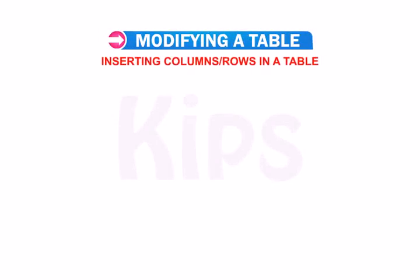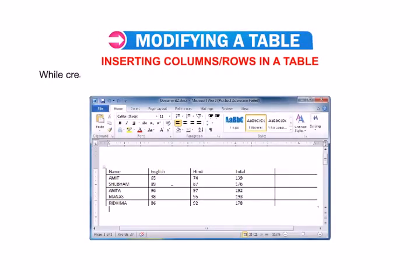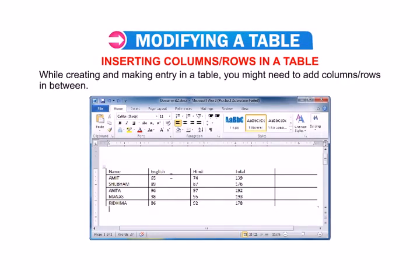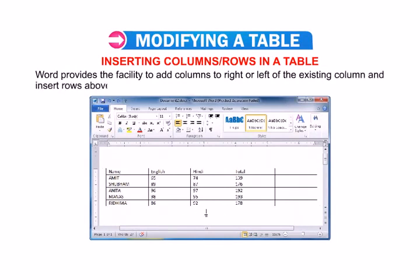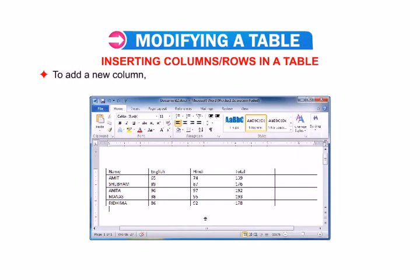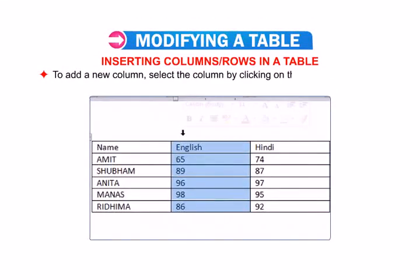Now let us learn how to insert columns or rows in a table. While creating and making entries in a table, you might need to add columns or rows in between. Word provides a facility to add columns to the right or left of the existing column and insert rows above or below the selected row. To add a new column, select the column by clicking on the top border of it, adjacent to which you want to insert a new column.